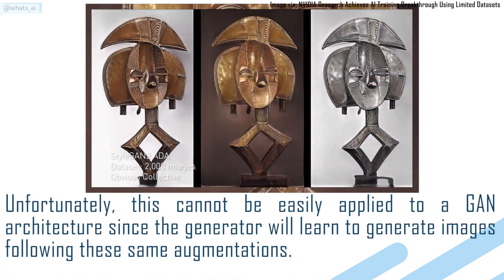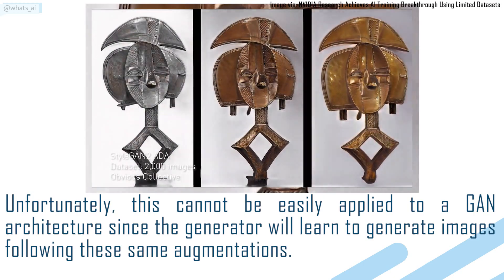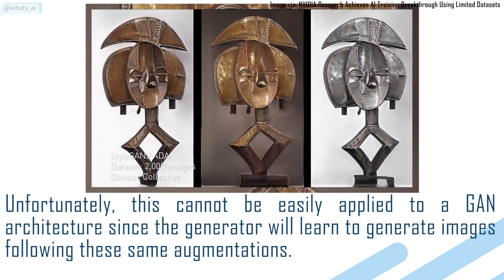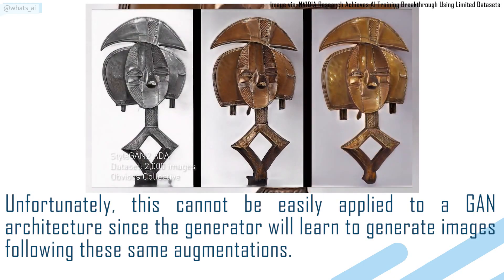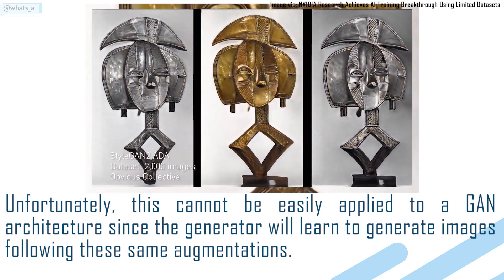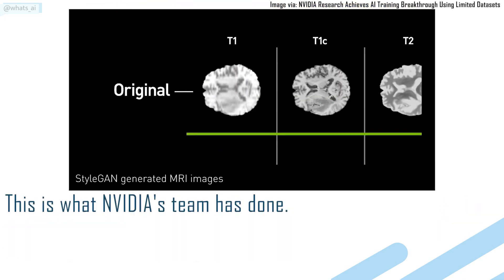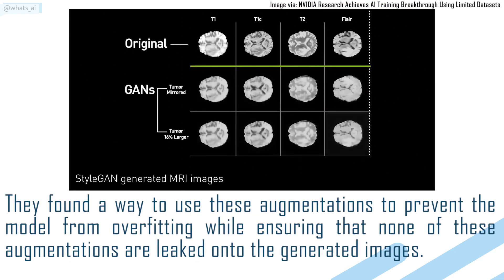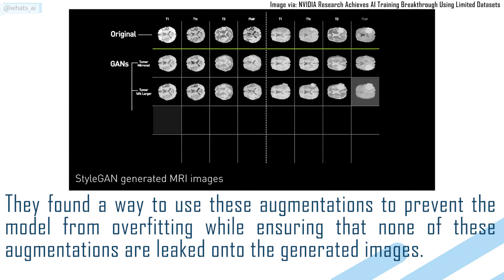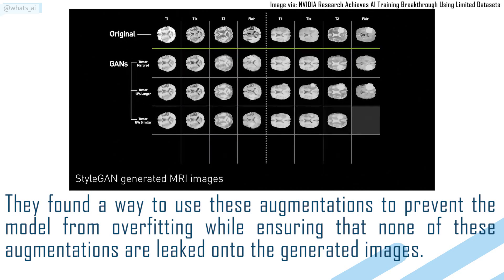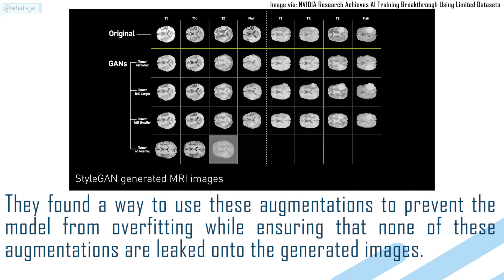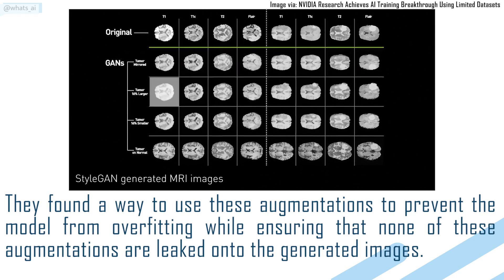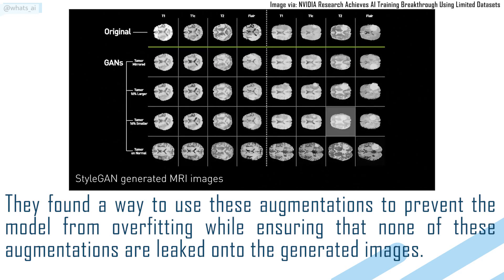Unfortunately, this cannot be easily applied to a GAN architecture, since the generator will learn to generate images following these same augmentations. This is what NVIDIA's team has done — they found a way to use these augmentations to prevent the model from overfitting, while ensuring that none of these transformations are leaked onto the generated images.